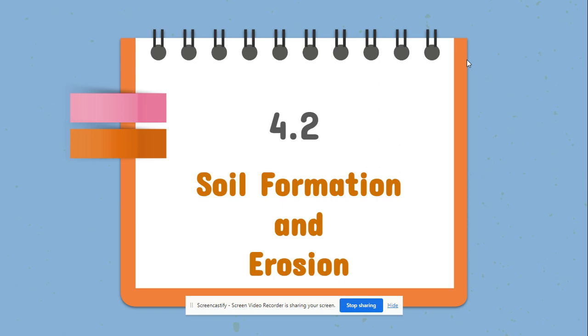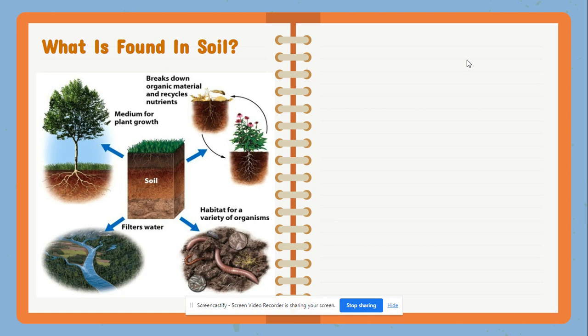Looking at topic 4.2 and the next few topics, we're going to get into what is soil, what is found in soil, and how does soil form. Taking a look at this picture here, we can see soil has a lot of things — it's not just dirt. Soil can have things like water, biological things like microbes, bacteria, and plant roots.